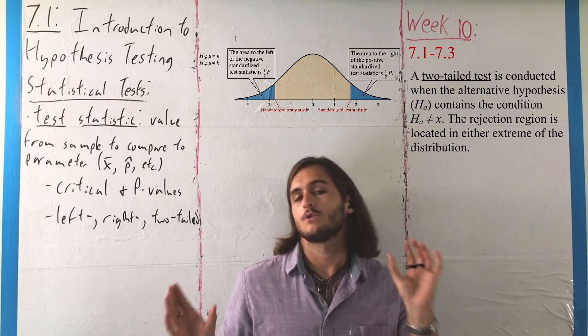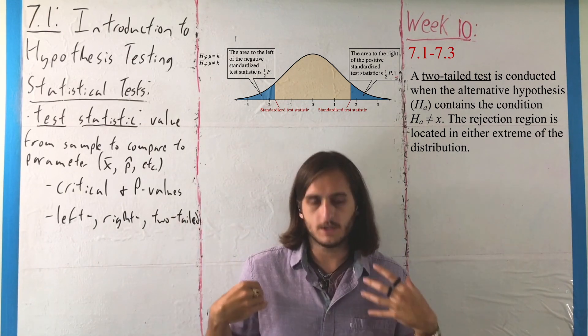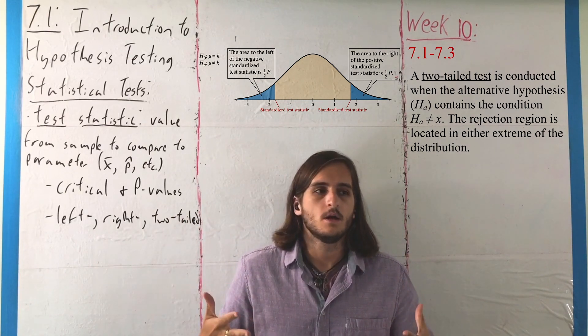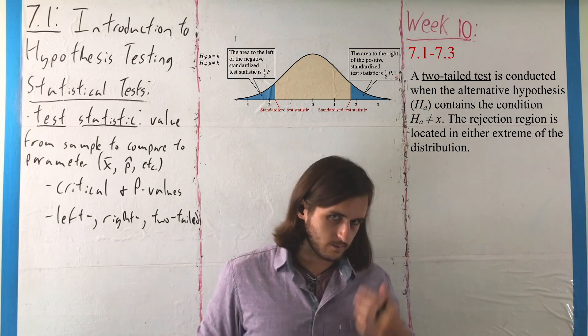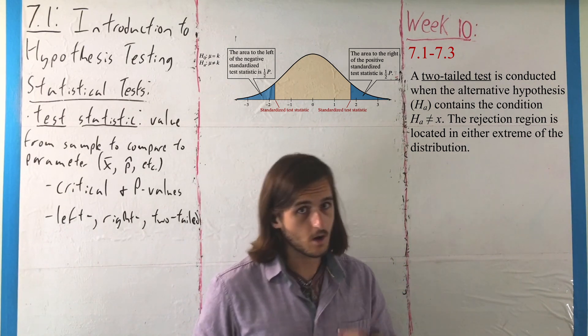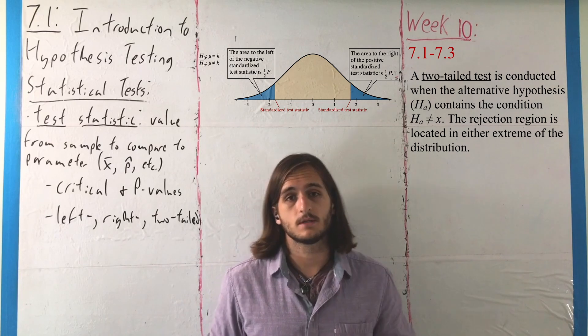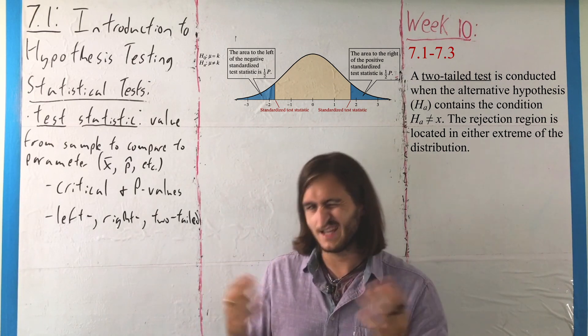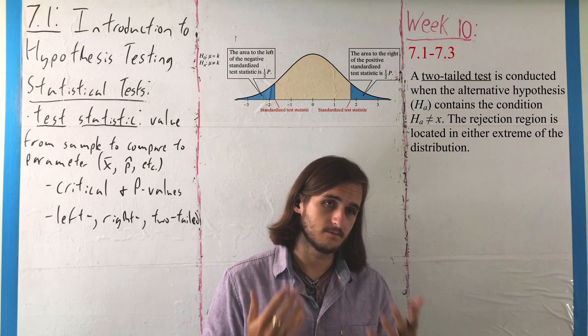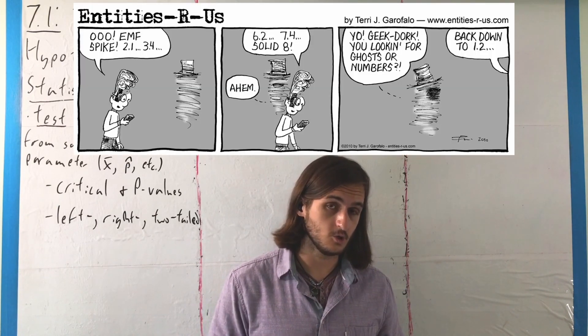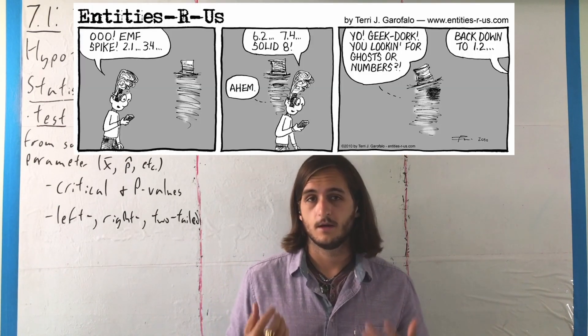But essentially these tails represent the regions of unlikelihood, the regions of things that are so far beyond the pale that we're willing to accept something is wrong with our assumptions if we get in there. But it's, again, all down to how badly you want that result.